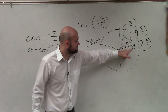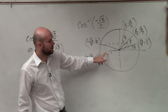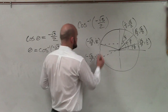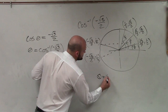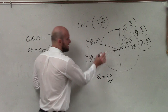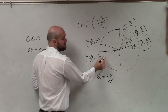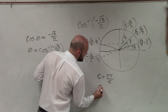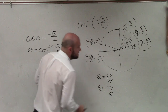If this is pi over 6, all the way around would be 6 pi over 6, so this angle is theta equals 5 pi over 6. And the third quadrant angle is just an extra pi over 6 over, so that would be theta equals 7 pi over 6.